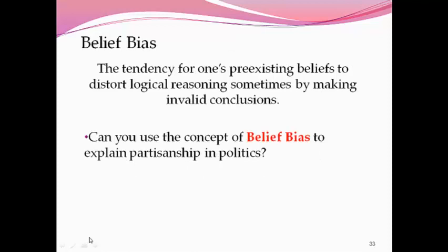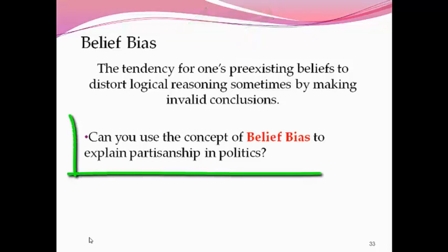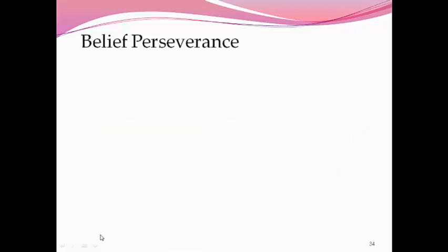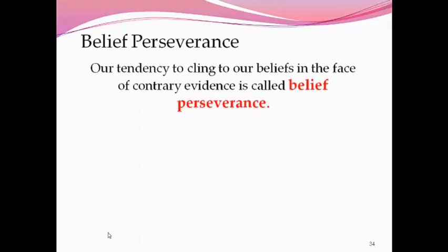Another cognitive tendency that can cause us to not make good decisions — and this is going to be huge in the next few months with elections coming up — is belief bias. Belief bias is a tendency for our pre-existing beliefs to distort our logical reasoning by making invalid conclusions, so we become inflexible. Can you use belief bias to explain partisanship in politics? Belief perseverance — to persevere means to stick to it — is our tendency to cling to our initial concepts even in the face of contradictory evidence. When your belief is discredited, you still cling to it.